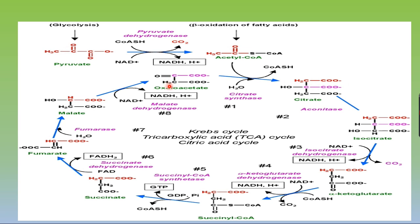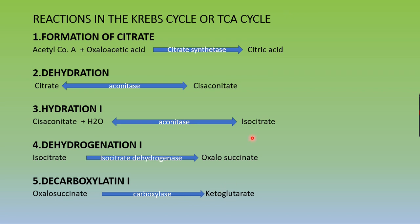Fumarate is then hydrated — water is added — to form malate, catalyzed by the enzyme fumarase. Malate is then converted back to oxaloacetate by malate dehydrogenase, which removes hydrogen atoms accepted by NAD⁺ to yield NADH + H⁺. The regenerated oxaloacetate then combines with another molecule of acetyl-CoA, and the cycle continues.